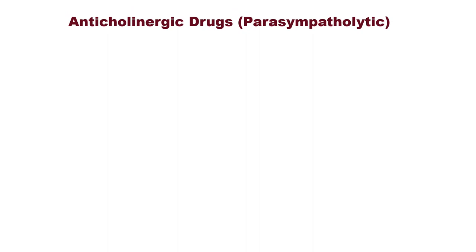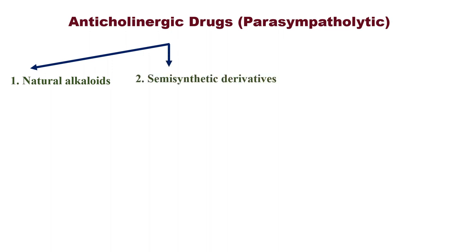Anti-cholinergic drugs, or parasympatholytics, are divided into natural alkaloids, semi-synthetic derivatives, and synthetic compounds. Here, take an example of food: natural food, semi-synthetic food, and synthetic food.